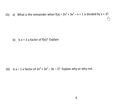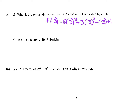Rather than doing long division to find the remainder, we can take x equals negative 3. If this is x plus 3, the zero that would go along with that would be negative 3. We could take negative 3 and substitute it in for all the x's in this function. I just replaced every x with a negative 3 — just make sure they go in parentheses, and it's the only thing that goes in the parentheses.